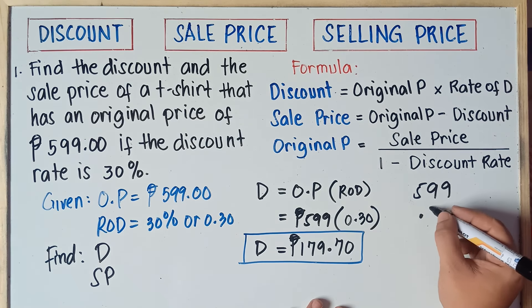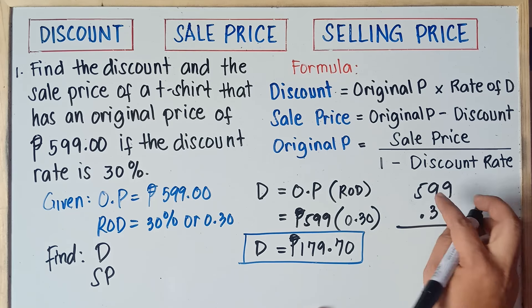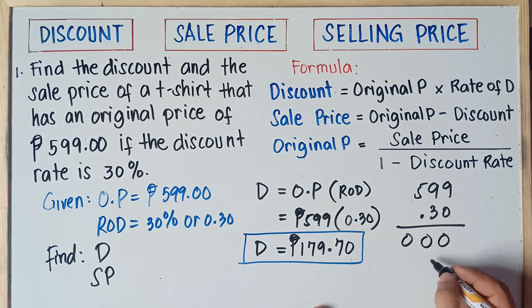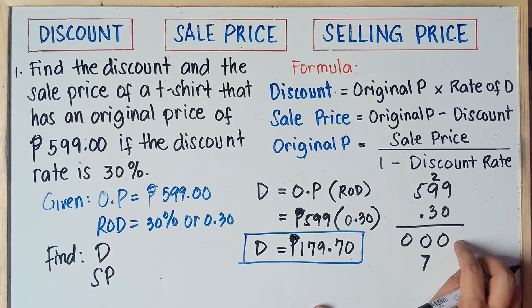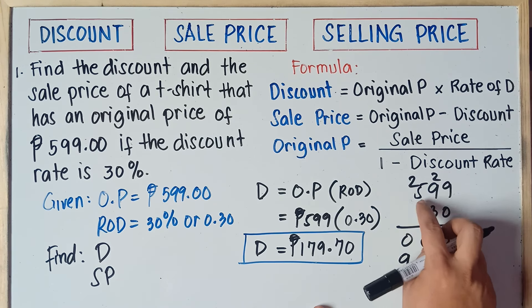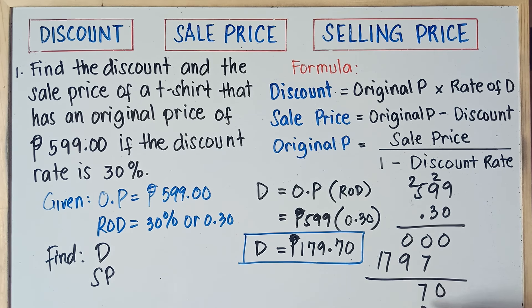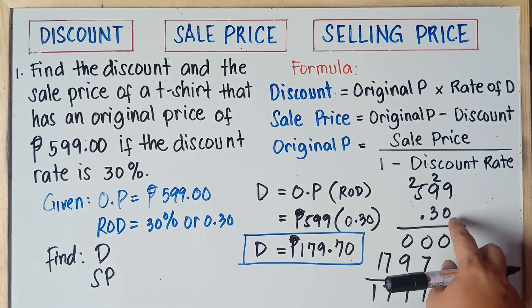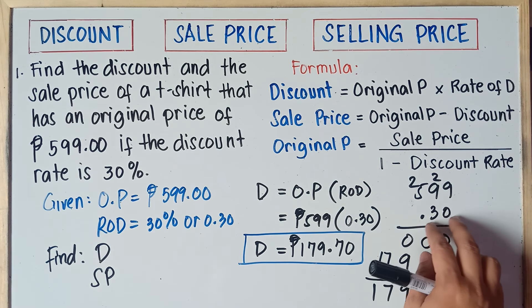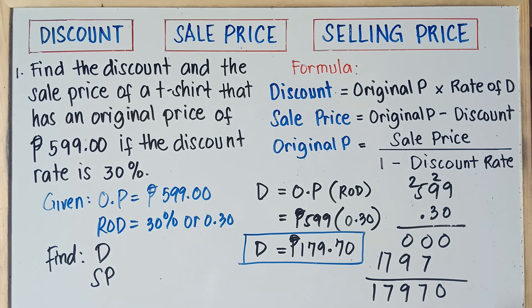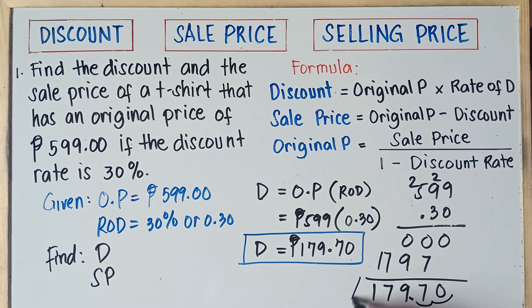Multiplying manually: 0 × 9 = 0, 0 × 9 = 0, 0 × 5 = 0. Then 3 × 9 = 27 (write 7, carry 2), 3 × 9 = 27 + 2 = 29 (write 9, carry 2), 3 × 5 = 15 + 2 = 17. Then add: bring down 0, 0 + 7 = 7, 0 + 9 = 9, bring down 7, bring down 1. Count the decimal places: 0.30 has 2 decimal places. So from your answer, move the decimal point 2 units right to left: 1, 2 — giving 179.70. Same answer.